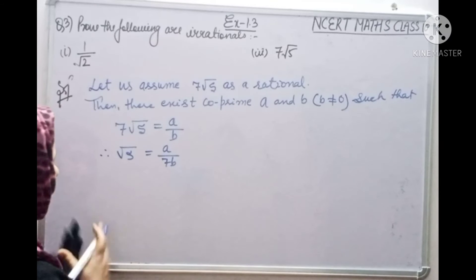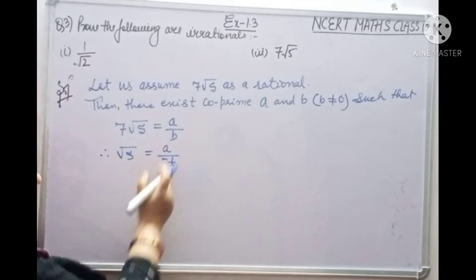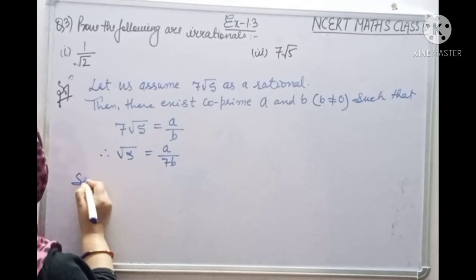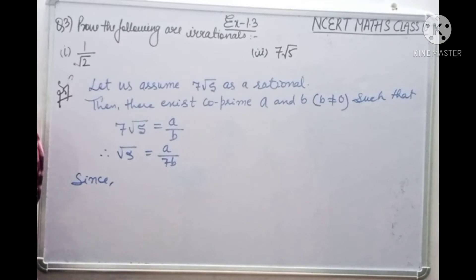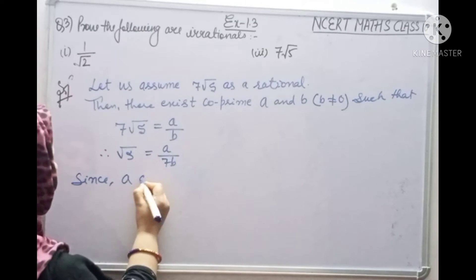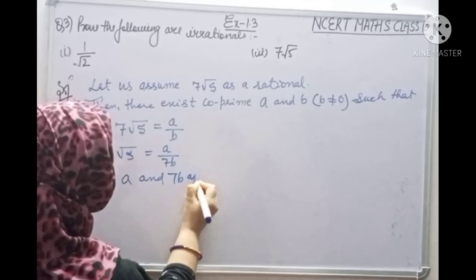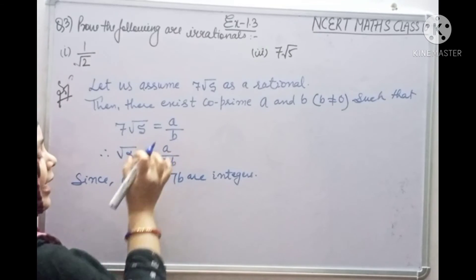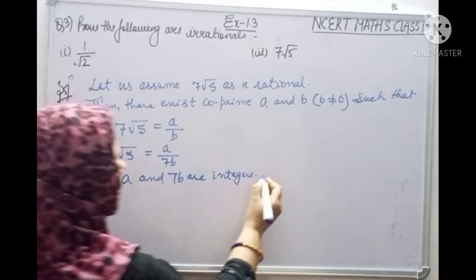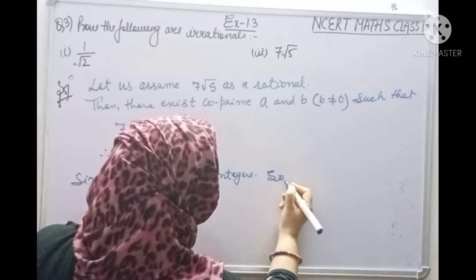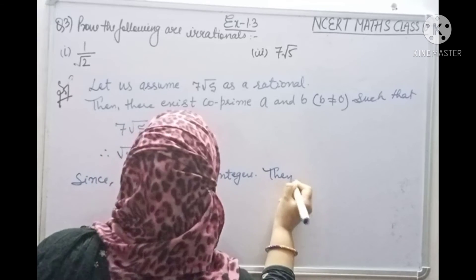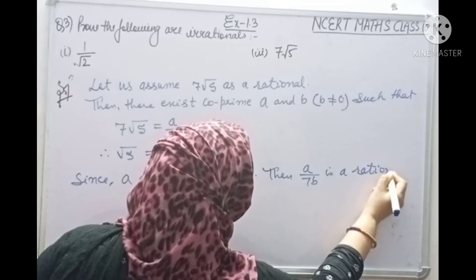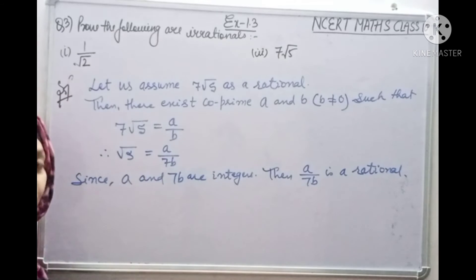Since A and B are integers, A and 7B are also integers. Therefore A by 7B is a rational number. If A by 7B is rational, then root 5 is also rational.